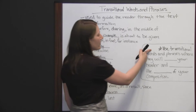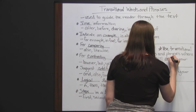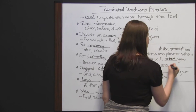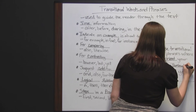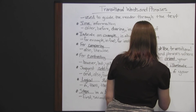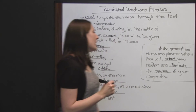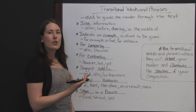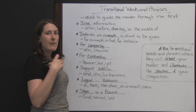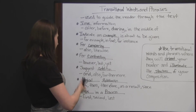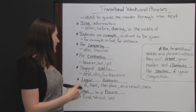Make sure you use your transitional words and phrases where they will orient your reader and illuminate the structure of your composition. You want to let your readers know where they are in your paper. If you're describing a sequence: first this happens, next this happens. If it's steps in a process: first you do this, second you do this.